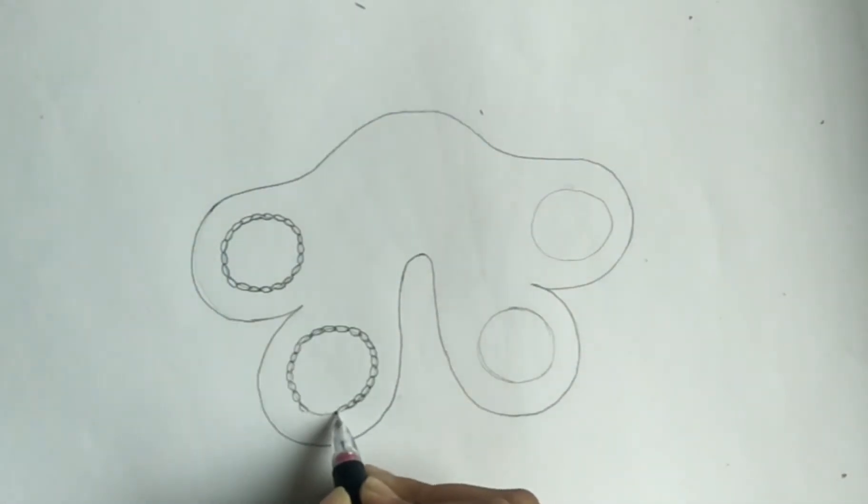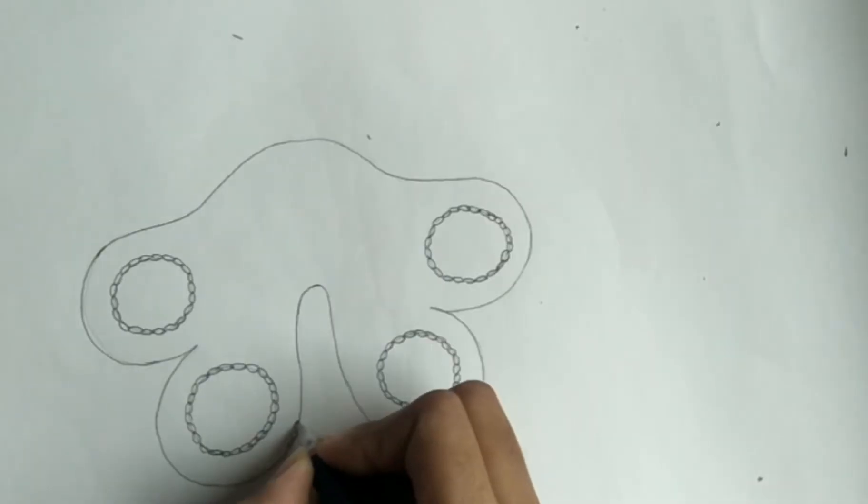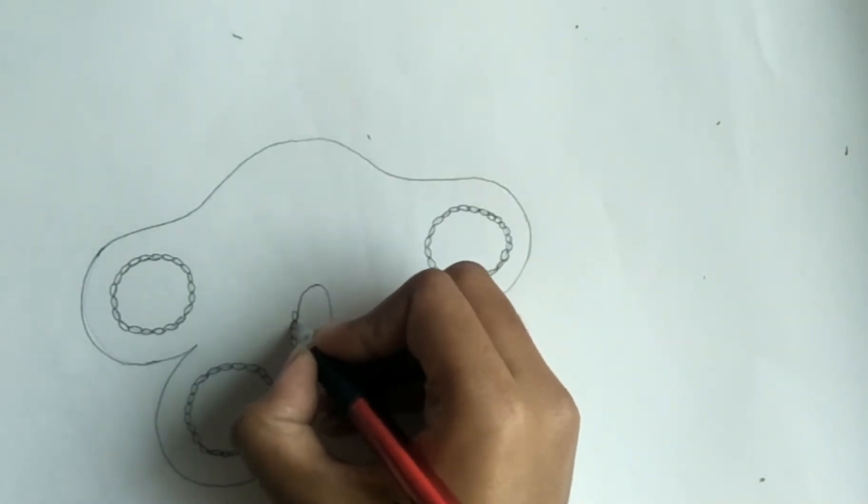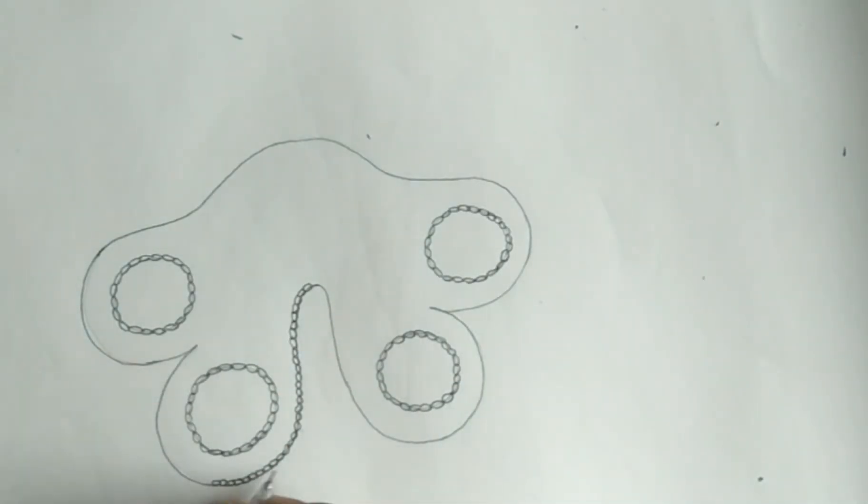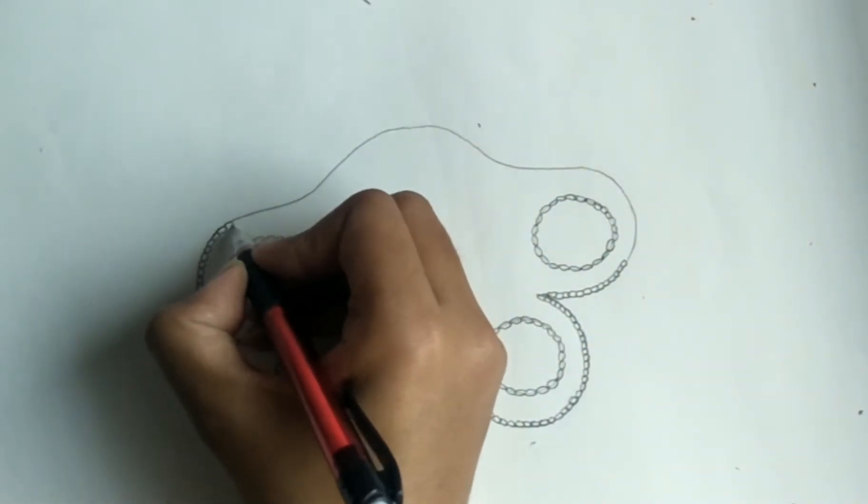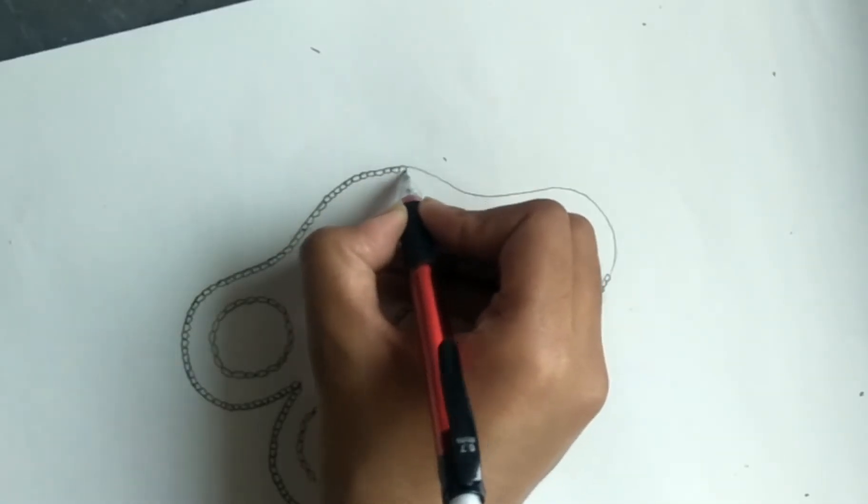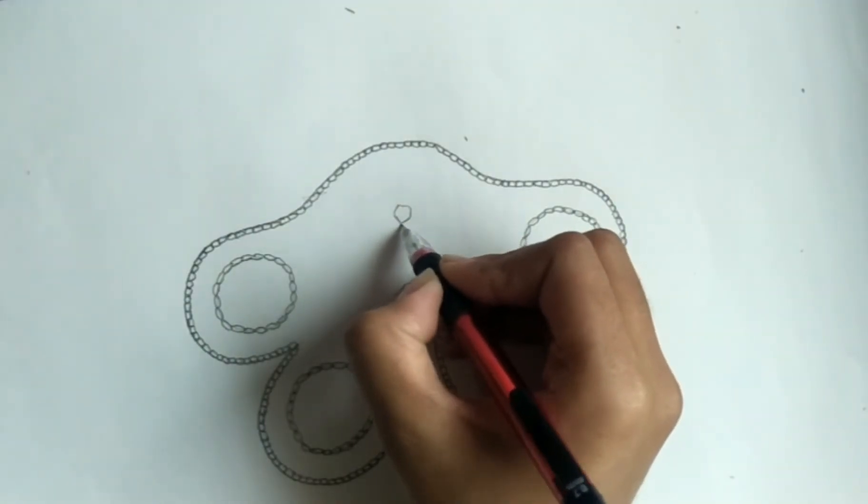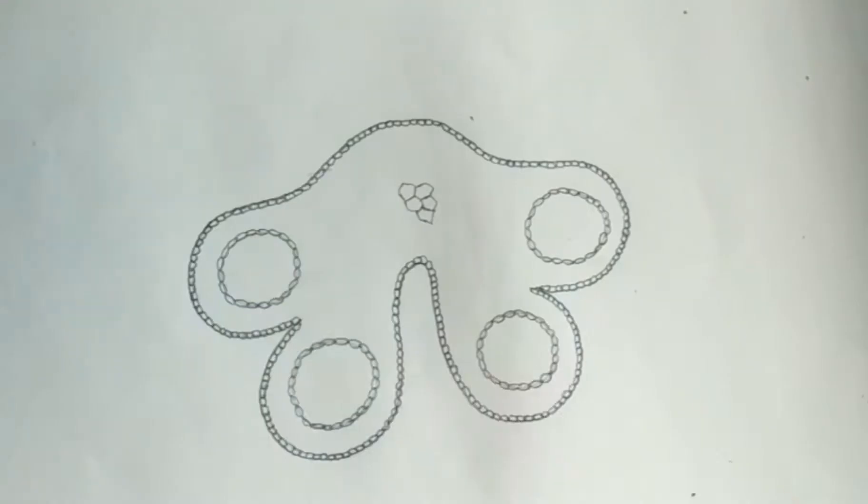Now here starts the drawing. The small texture is important to show the difference between the layers. It's important to show the difference between the four types of layers: epidermis, endothecium, middle layers, and tapetum.